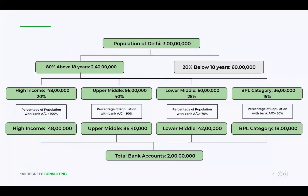Yes. So firstly, I would take the population of Delhi, which is 3 crores. Then I will apply the age filter. I will consider the above-18 population because I assume this is the population that will actually have accounts with banks. The population below 18 also have accounts, but mostly they're joint with their parents or guardians. So I'll consider the above-18 population, which is 80% and comes out to be 2 crores 40 lakhs.